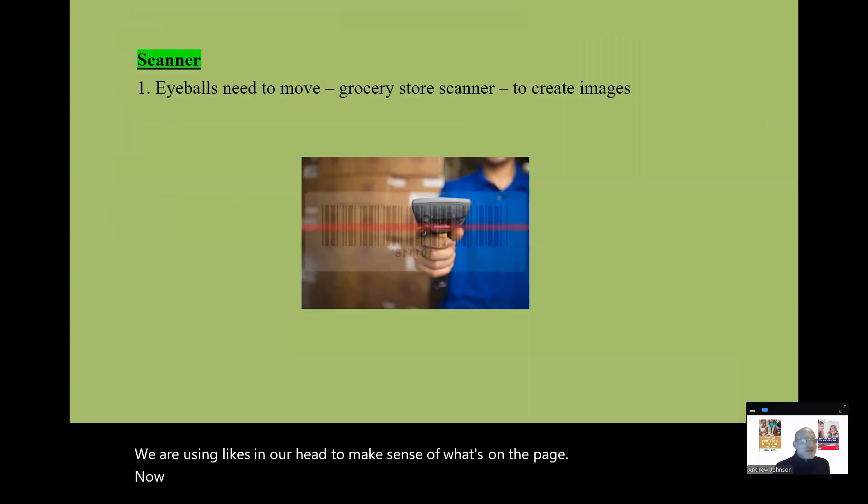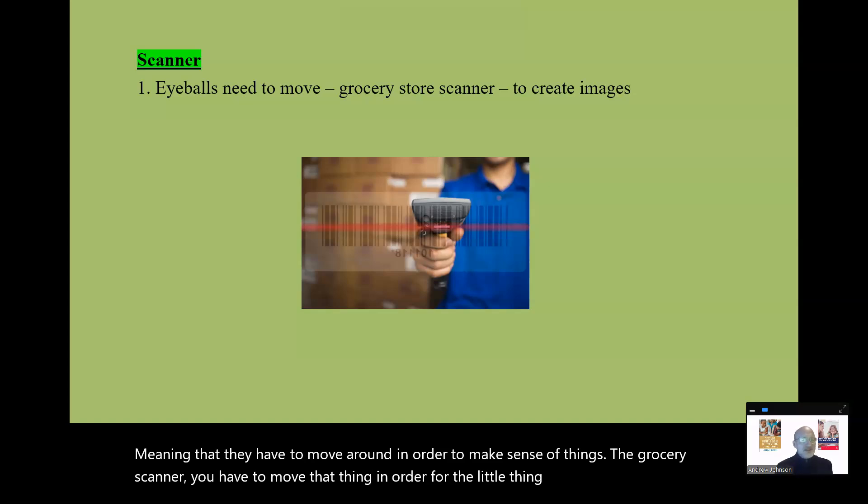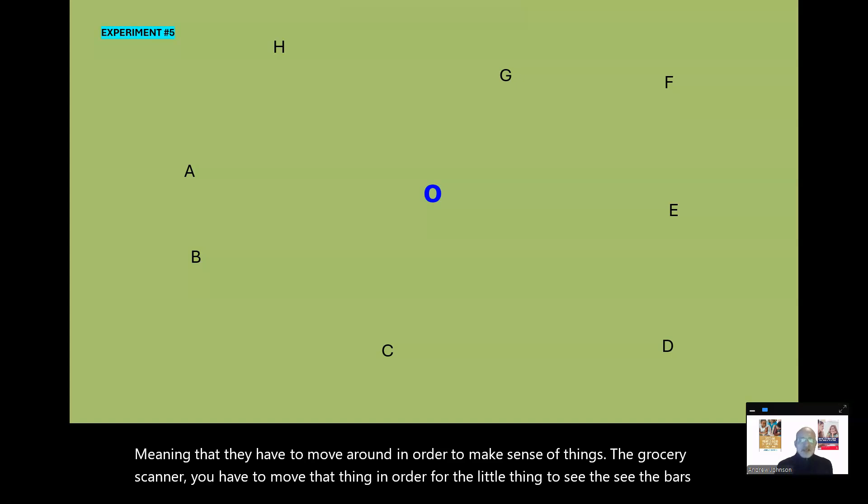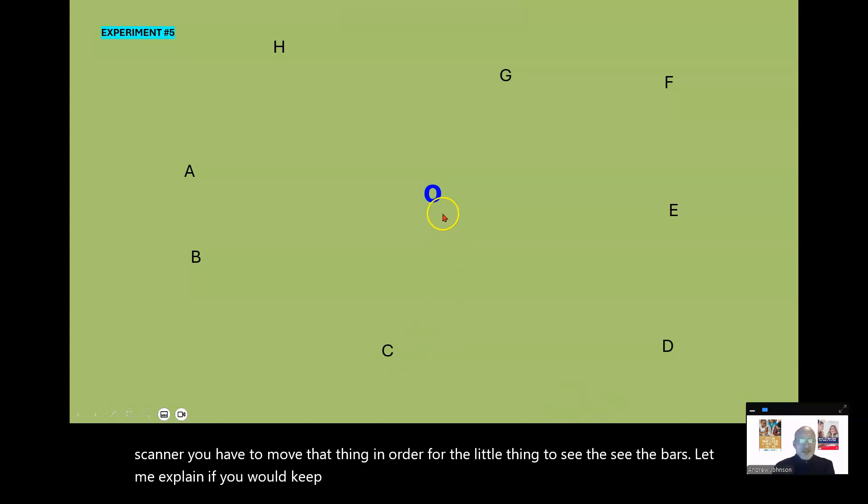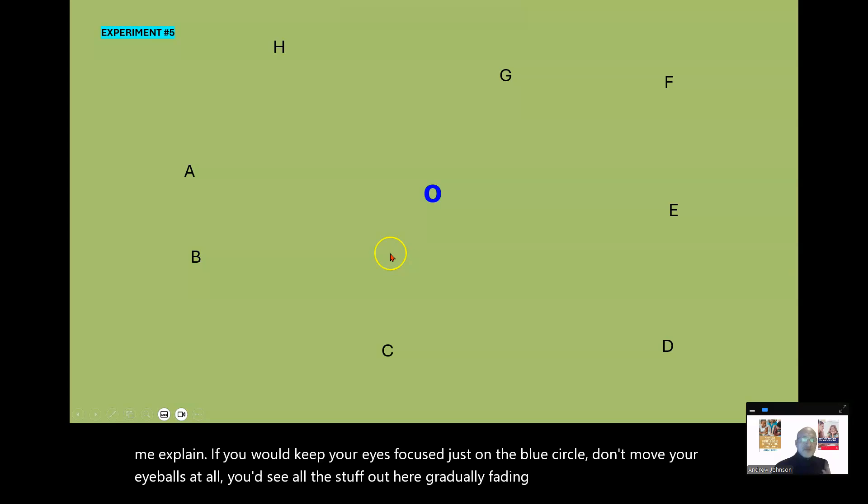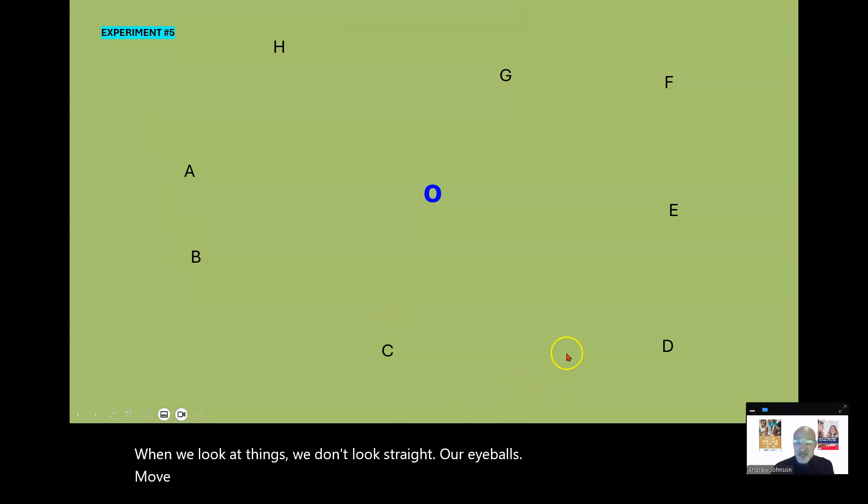Now, here's the thing about your eyes. They act like a scanner, meaning that they have to move around in order to make sense of things. It's the grocery scanner. You have to move that thing in order for the little thing to see the bars. If you would keep your eyes focused just on the blue circle, don't move your eyeballs at all, you'd see all the stuff out here gradually fading away. When we look at things, we don't look straight. Our eyeballs move around and take little fixations and little snapshots, and our brain is filling in the blanks.